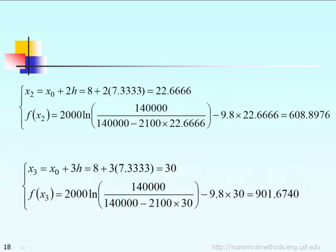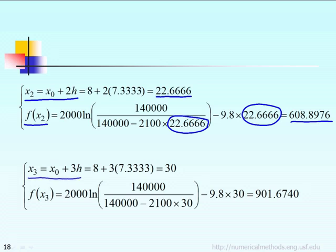Same thing for x2. x2 equals x0 plus 2h, which is equal to approximately 22. The function at x2 — you just replace x by 22, so f(x2) is equal to 608. Same thing for the last one: x3 equals x0 plus 3h, which is equal to 30. So f(x3) — replace x by 30 — and f(x3) equals 901.